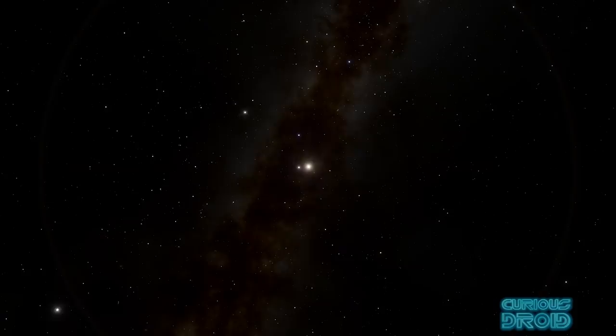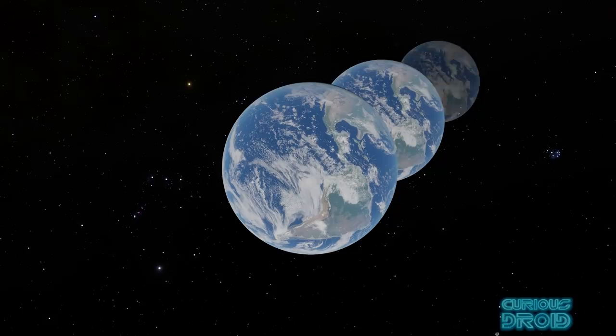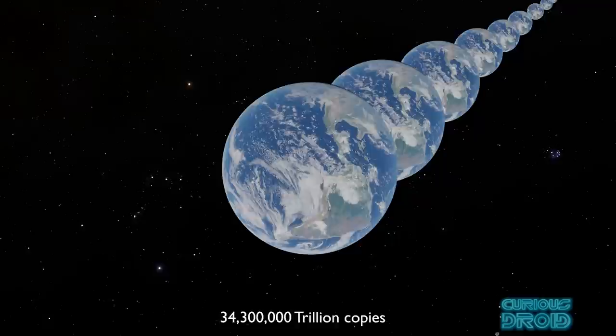Our nearest star Alpha Centauri is 4.3 light years away, a one-way journey time of 6,729 years for the Parker. If we cloned the earth and placed these copies side by side to the edge of the known universe, we would have to make 34,300,000,000,000 copies.